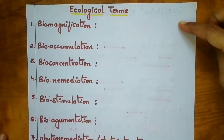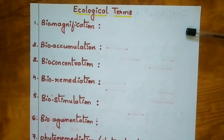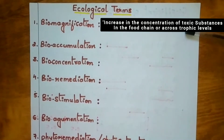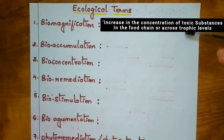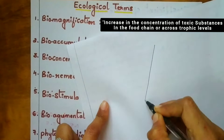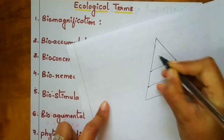The first term is biomagnification. The definition for biomagnification is: increase in concentration of toxic substances in the food chain or across trophic levels is called biomagnification. I hope you know what trophic levels and food chains are — they have been explained in lower classes.